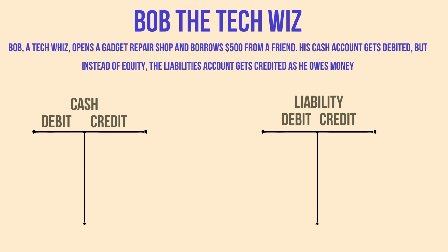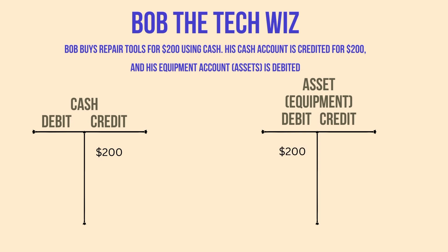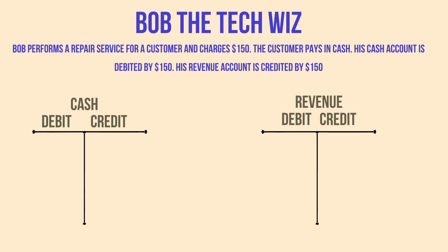Bob, a tech whiz, opens a gadget repair shop and borrows $500 from a friend. His cash account gets debited, but instead of equity, the liabilities account gets credited as he owes the money. Bob buys repair tools for $200 using cash. His cash account is credited for $200 and his equipment account, an asset, is debited. Bob then performs a repair service and charges $150. The customer pays in cash — his cash account is debited by $150 to reflect the increase in cash, and his revenue account is credited by $150 to show he has earned revenue.